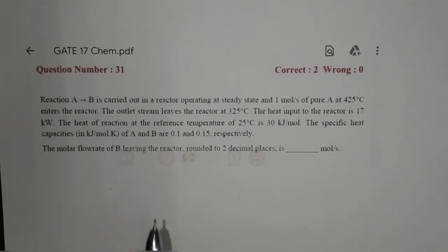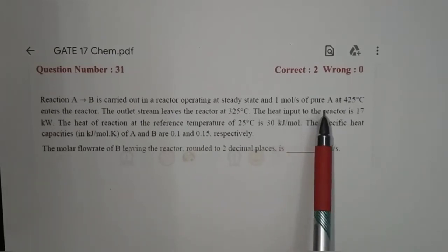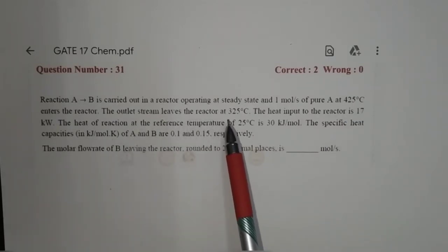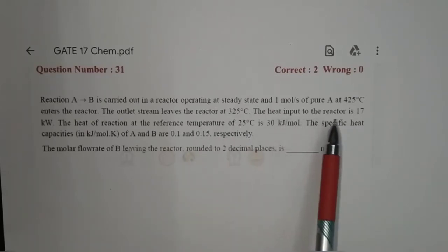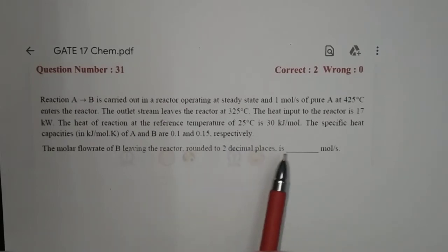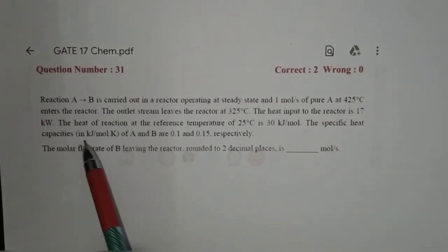In this question, the reaction is A giving B — 1 mole of A gives 1 mole of B. The feed is 1 mole per second of pure A at 425 degrees Celsius, and the outlet is at 325 degrees Celsius. The heat input to the reactor is 17 kilowatts. The heat of reaction at the reference temperature of 25 degrees Celsius is 30 kilojoules per mole.